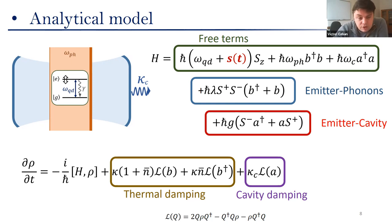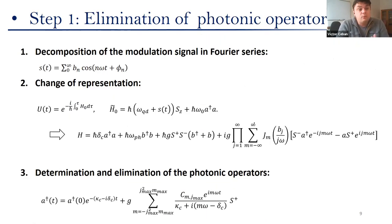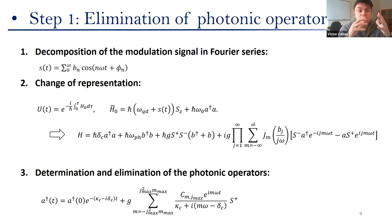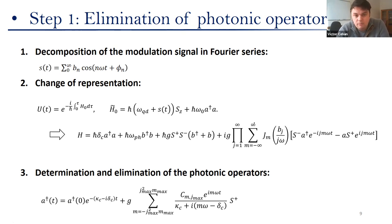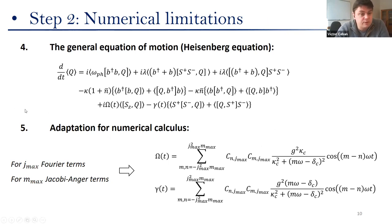In order to solve the system dynamics, the first step is to eliminate the photonic operators — the operators of the optical cavity. To do that, we consider the modulation signal as periodic so that we can decompose it through a Fourier series. Then we choose a specific change of representation so that we are able to define the expression of the photonic operators. We then insert this expression back into the master equation to eliminate them. Once eliminated, the Heisenberg equation for a system operator takes its final form.